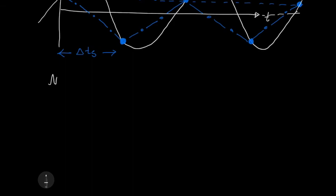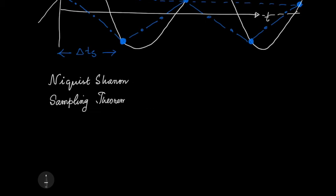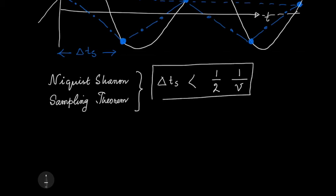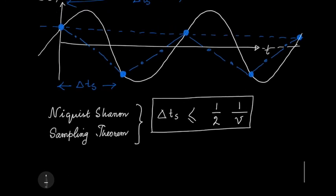There is a theorem — the Nyquist–Shannon sampling theorem — which states that δt_s must be less than or equal to 1/(2ν), meaning the sampling must be at least twice as fast as the time period of the signal. Given any detector, the minimum achievable δt_s is always ≥ t_d + δt. So the question is whether this minimum δt_s is still small enough to satisfy the Nyquist criterion for the frequency range of interest.